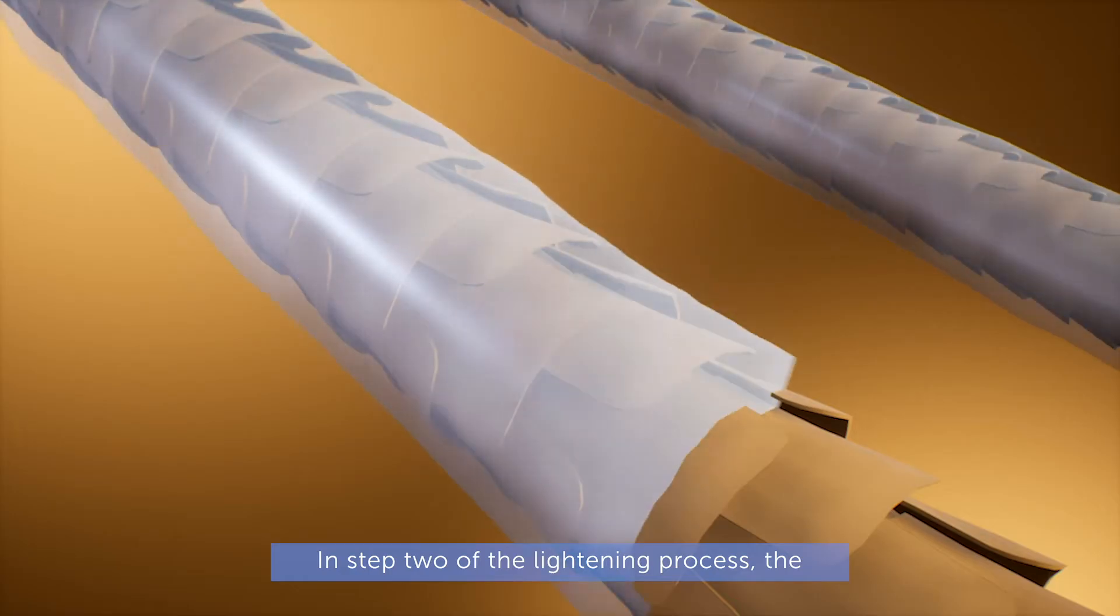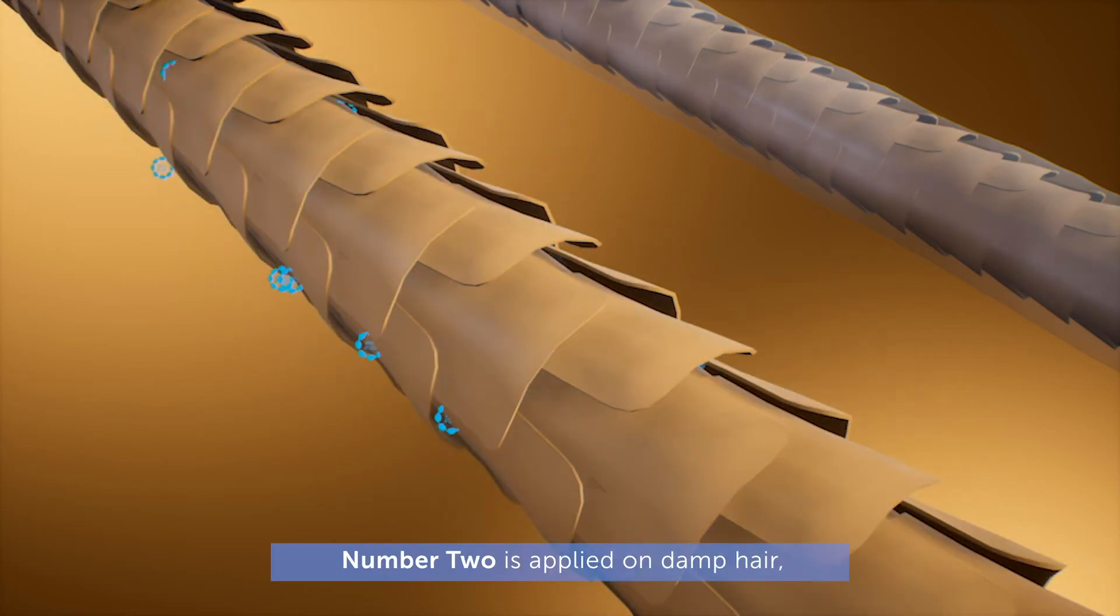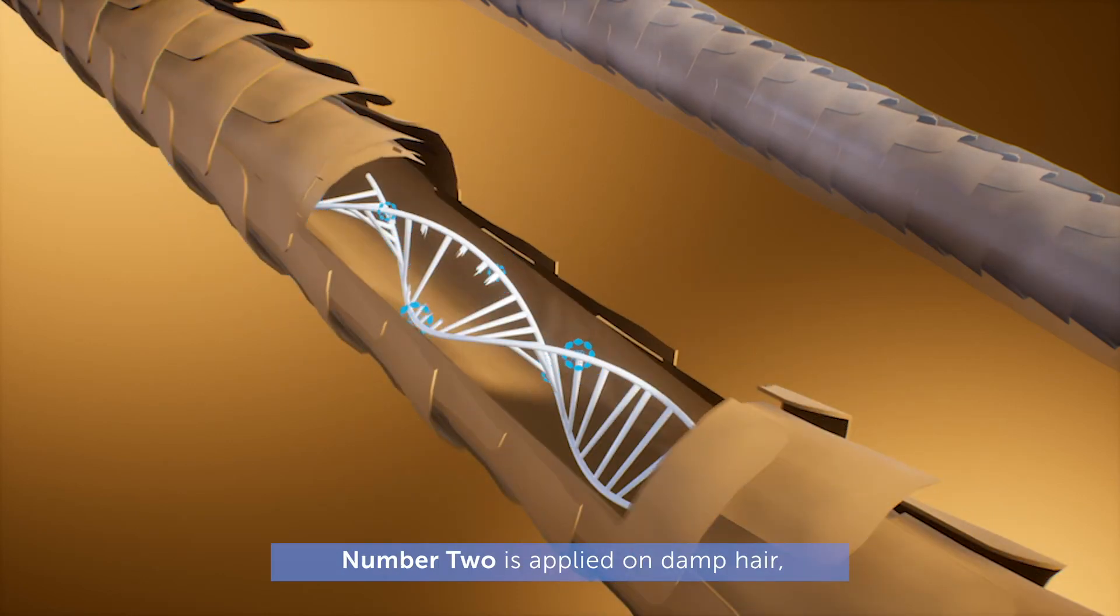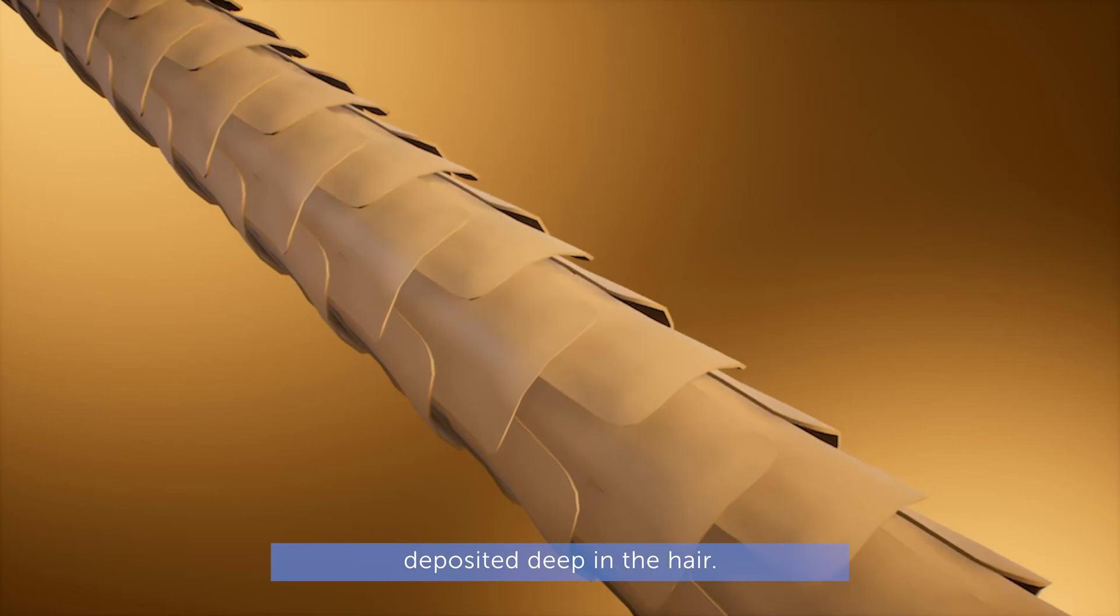In step two of the lightening process, the Lightplex Bond Completion In-Salon Treatment Number Two is applied on damp hair, activating the malic acid that has already been deposited deep in the hair.